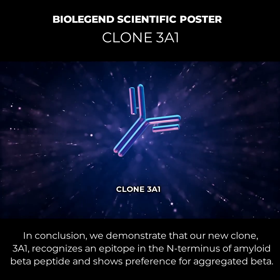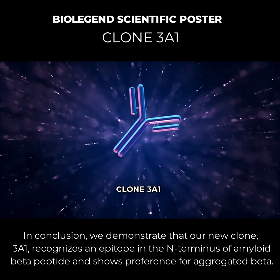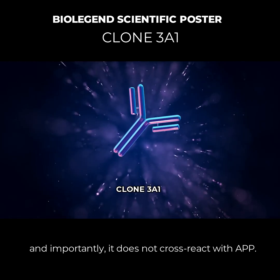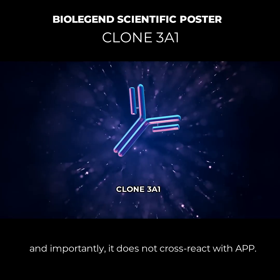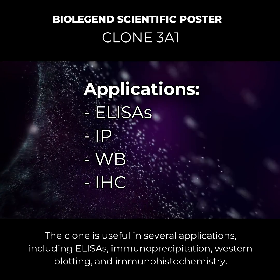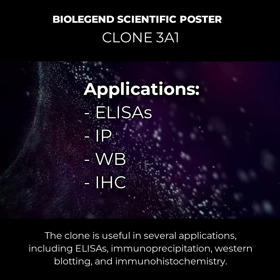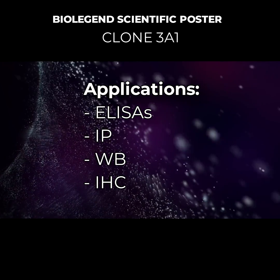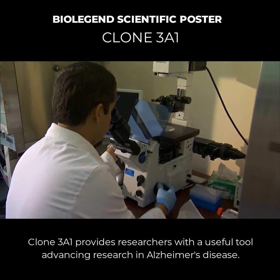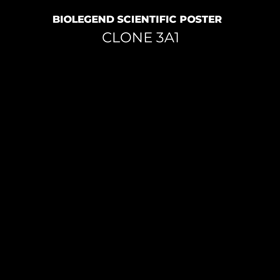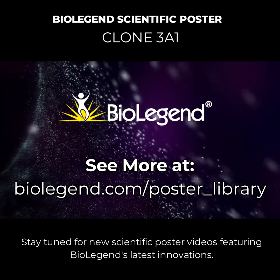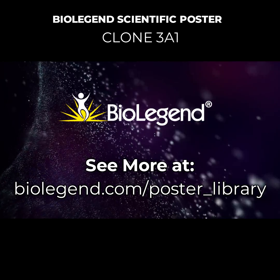In conclusion, we demonstrate that our new clone, 3A1, targets the N-terminus of aggregated human amyloid beta, and importantly, it does not cross-react with APP. The clone is useful in several applications, including ELISAs, immunoprecipitation, western blotting, and immunohistochemistry. Clone 3A1 provides researchers with a useful tool advancing research in Alzheimer's disease. Stay tuned for new scientific poster videos featuring BioLegend's latest innovations.